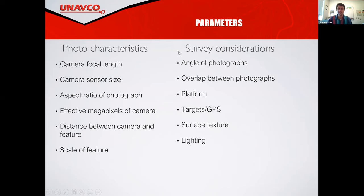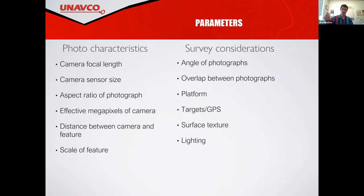When we go out to do the survey itself, there are a lot of things to think about. The first one is the angle of the photographs. We have to get every little angle we can so that we have information — point clouds, basically X, Y, Z points — of that object. We can't just take a top-down survey of an area; we have to have different angles to get the undulations or the three-dimensional aspects.